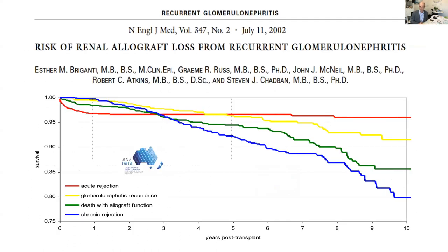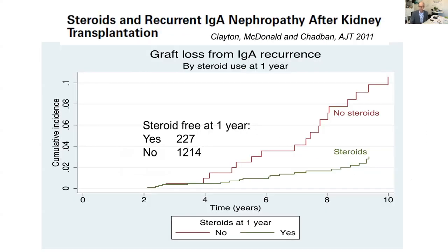This man had IgA nephropathy. We've known for a long time that glomerulonephritis can recur in the graft and cause it to fail. Data produced nearly 20 years ago shows that by 10 years post-transplant, recurrent disease is a more common cause of graft failure than acute rejection for patients who have glomerulonephritis as their primary disease. However, far more grafts are lost through chronic rejection or death with a functioning graft. Ultimately, patients with glomerulonephritis have survival post-transplant at least as good as others. Furthermore, there are things we can do to improve post-transplant survival, such as continued use of steroids for patients with IgA nephropathy, as suggested by data from Australia.